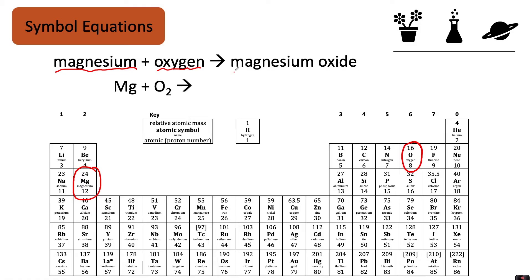However, you could spend all day looking for magnesium oxide on the periodic table and you wouldn't find it, because magnesium oxide is a compound. Magnesium and oxygen have reacted together to make a compound. This magnesium oxide is made up of magnesium and oxygen, so in order to write this compound as a symbol, we need to remember some rules on writing chemical formulae.